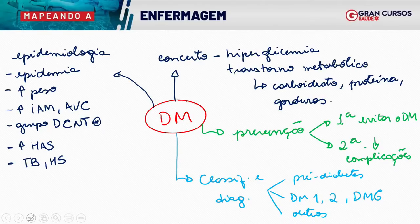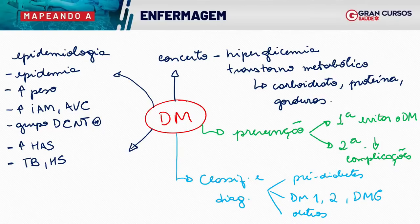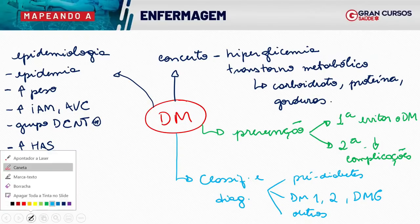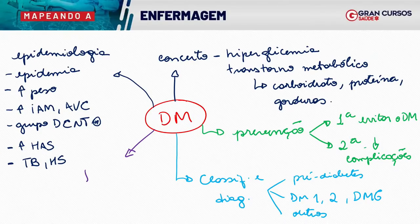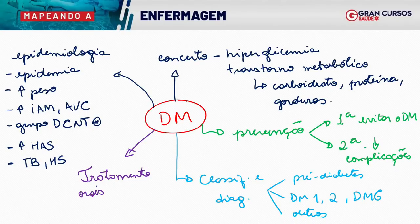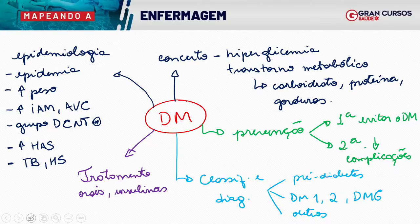Além disso, vamos falar sobre rastreamento — que entraria na prevenção secundária. E agora venho para o tratamento, que é uma abordagem muito aprofundada com comparação do tratamento. Dentro desse tratamento vamos falar dos medicamentos orais para o tipo 2 e também das insulinas. Isso cai demais em prova. E para finalizar esse mapa inicial, vamos falar também das complicações.